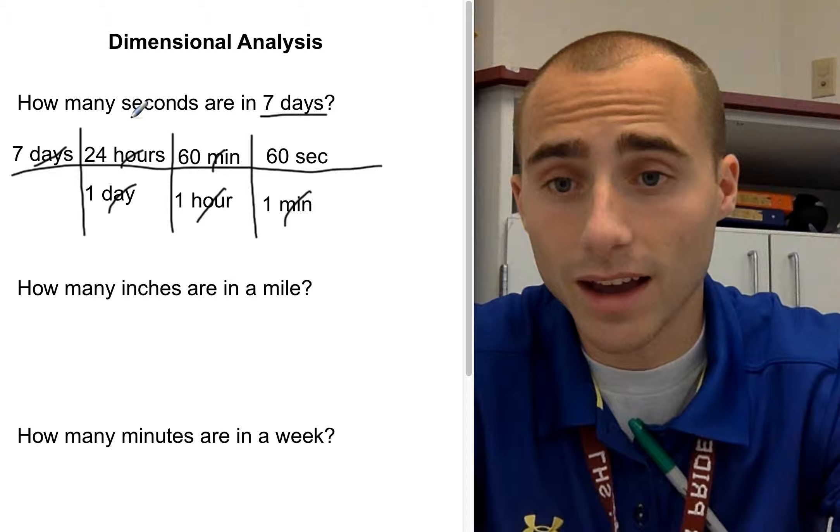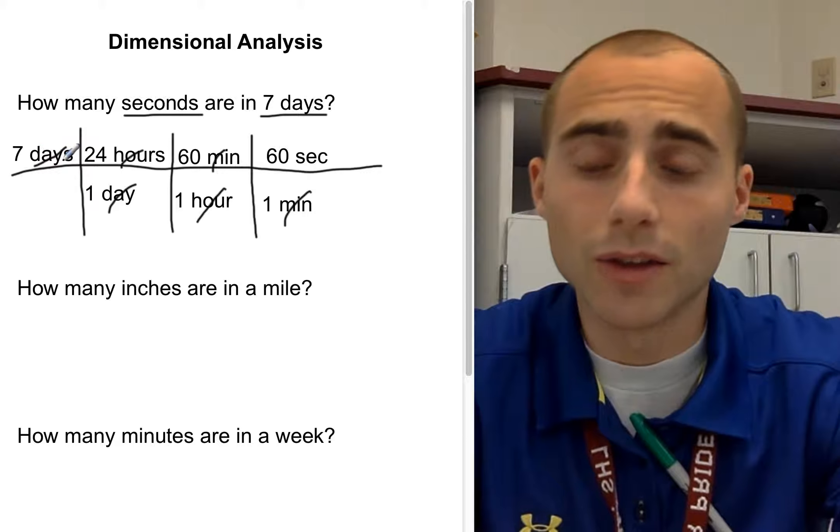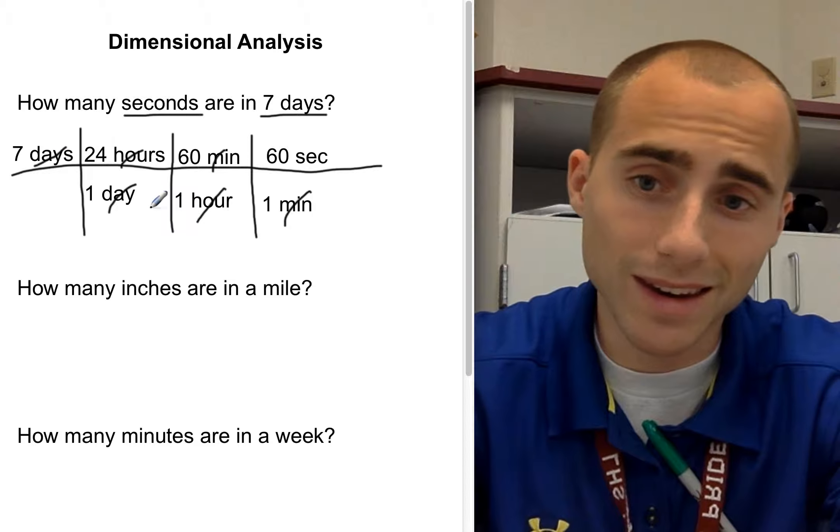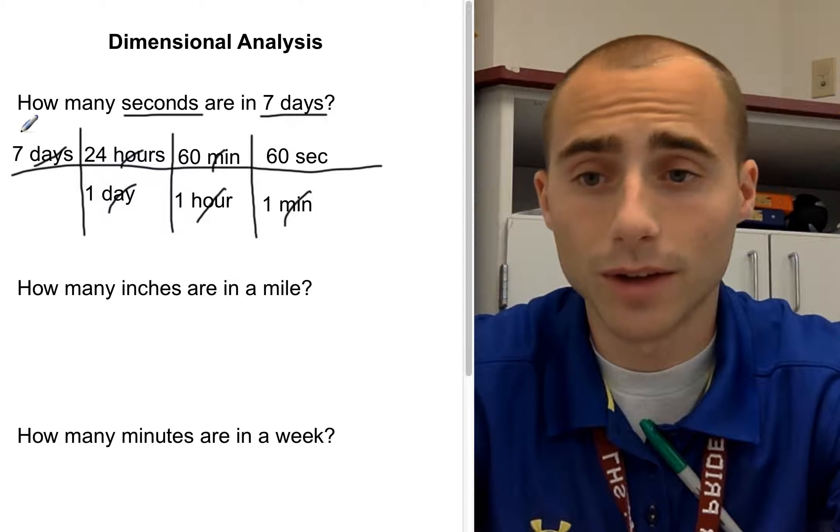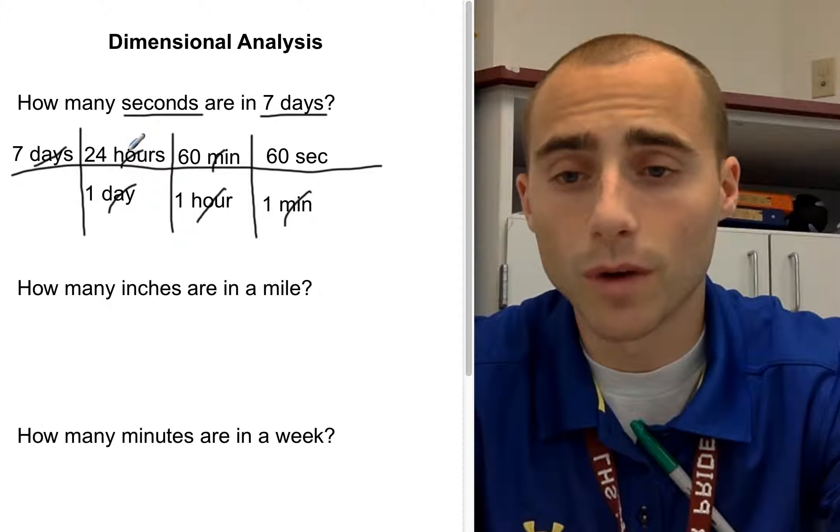And we are all the way down to seconds. And that's the unit we wanted, right? How many seconds are in seven days? We started with seven days. And then you always want to put this unit, whatever unit is on top, you want to put that diagonal to it in order to cancel it out. So we have seven days. We put one day, 24 hours. Hours, one hour, 60 minutes, minutes, 60 minutes, one minute is 60 seconds. So we convert all the way across using our railroad method to get down to seconds.